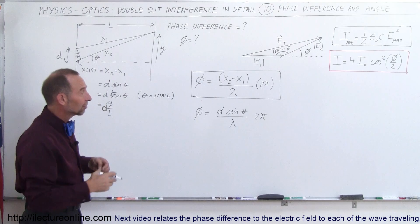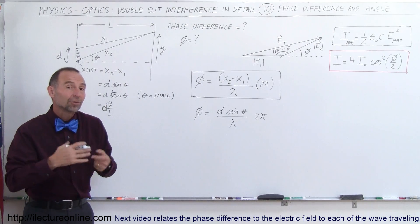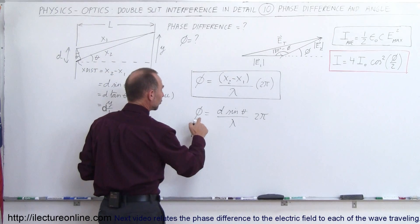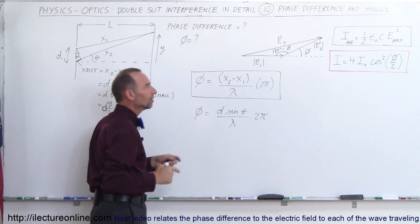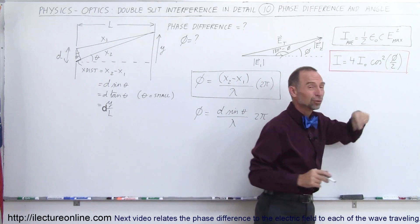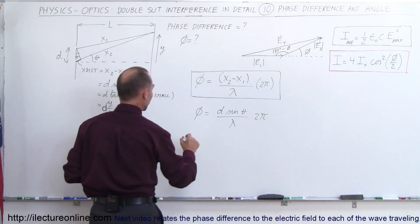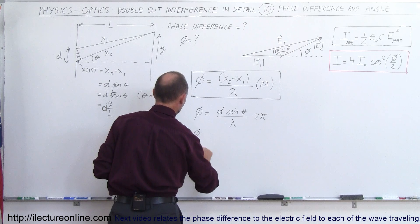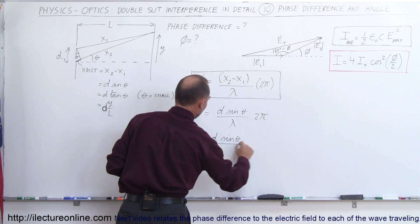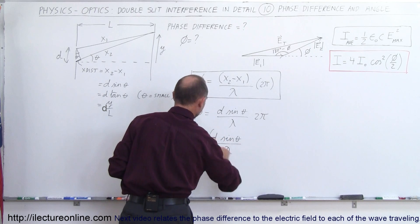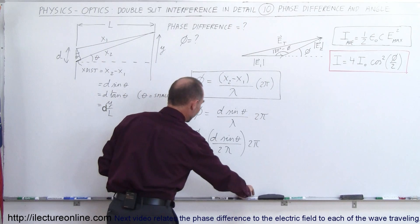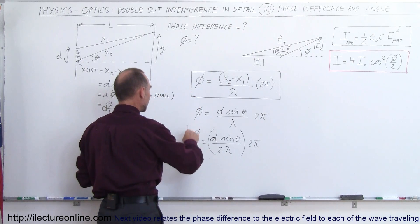Now, we can also write that as d sine theta divided by lambda times 360 degrees. Before we do that though, I want to write this in terms of phi over 2. The reason is because we have the equation of the intensity in terms of phi over 2, the phase angle divided by 2. So we can write that the phase angle divided by 2 is therefore equal to d sine theta divided by 2 lambda times 2 pi. And that would be the relationship that we're looking for between phi and theta.